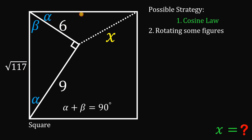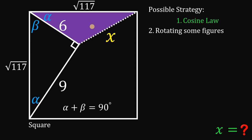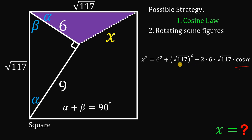Since it is a square, the other side is also the square root of 117. Using this triangle, we can now apply the cosine law, which states that the square of one side equals the sum of the squares of the remaining sides minus twice their product times the cosine of the included angle. So: x squared equals 6 squared plus (√117) squared minus 2 times 6 times √117 times cosine of alpha.